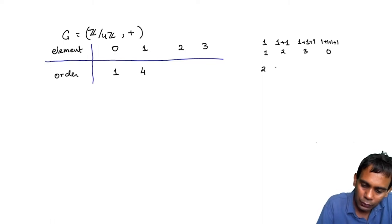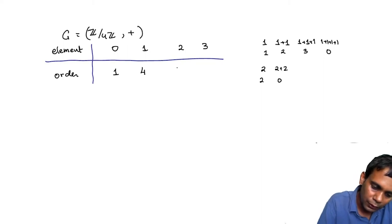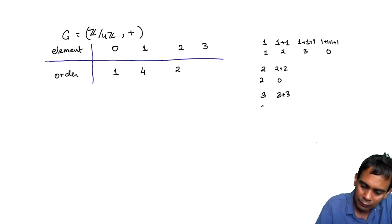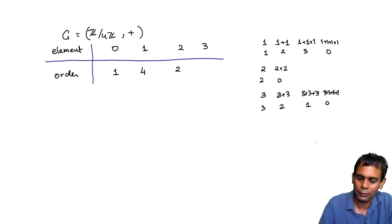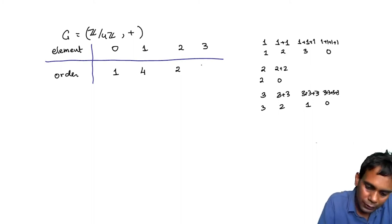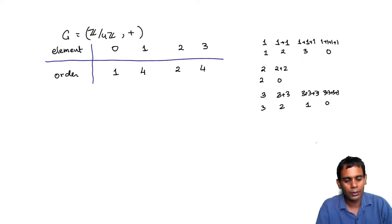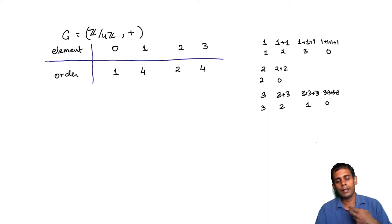For element 2: 2+2 is already 0, so the order of 2 is 2. For element 3: 3+3 is 6, which is 2 mod 4; 3+3+3 is 9, which is 1 mod 4; but 3 added 4 times gives 0. So 3 also has order 4. To summarize, Z mod 4Z has 4 elements: one of order 1, one of order 2, and two elements of order 4.